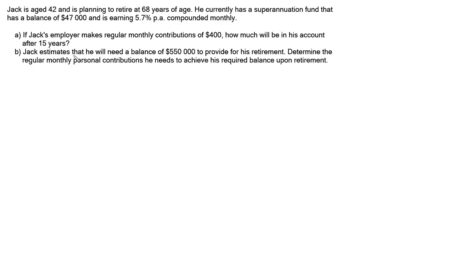Hi. In this video, I'm looking at this problem here where Jack, who's currently aged 42, is planning to retire at 68 years of age. At the moment he has $47,000 in his superannuation account and is earning 5.7% per annum compounded monthly.